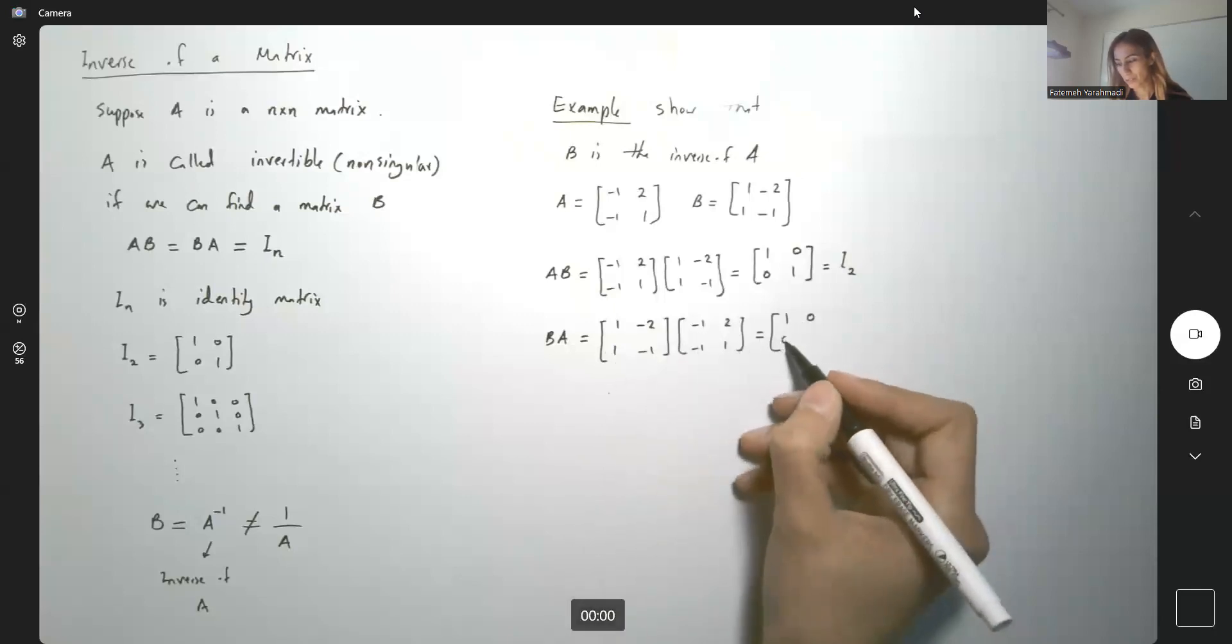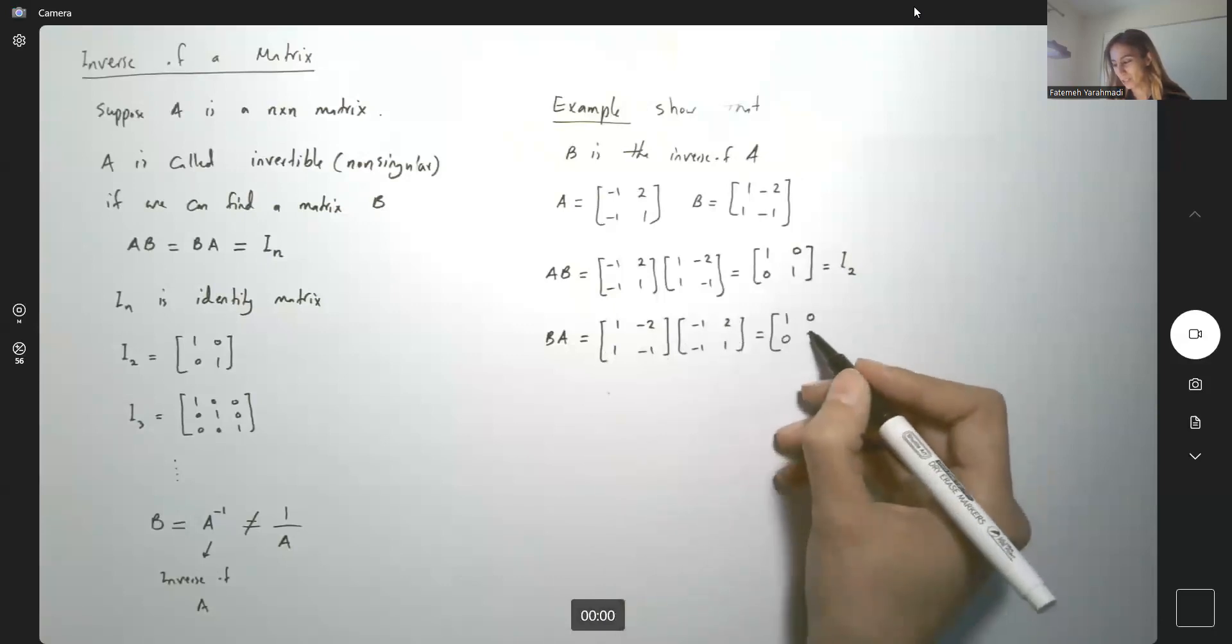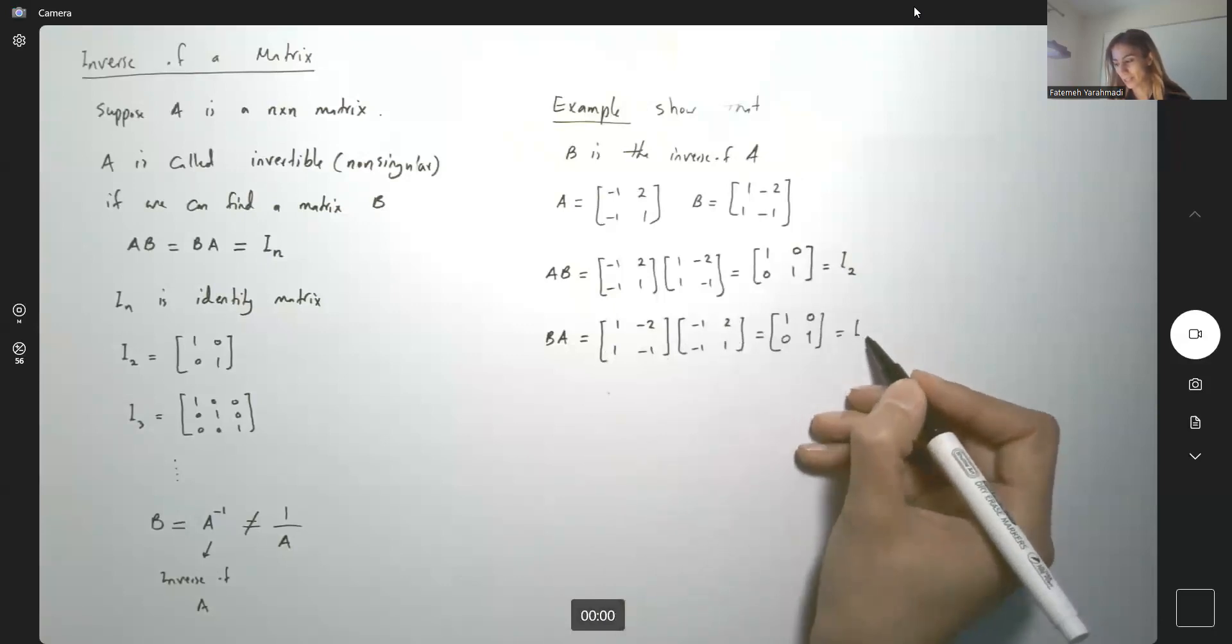Here you have negative 1 plus 1, 0. And 1 times 2, 2. Negative 1 times 1, negative 1. So we get 1 back. As you can see, it is I2.